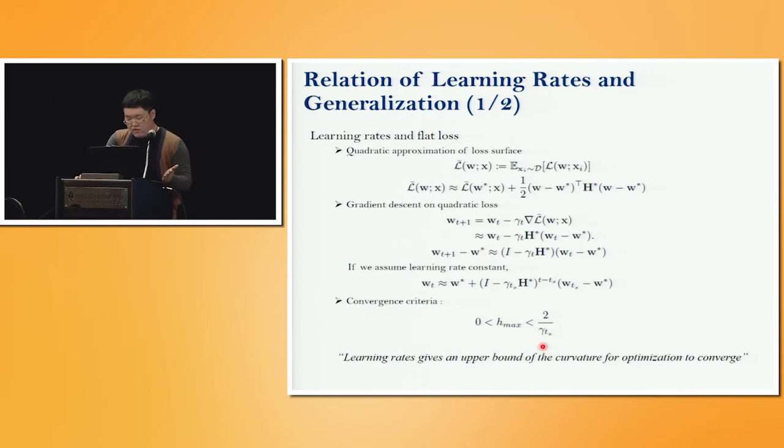If we rethink this condition, learning rate gives upper bound of curvature of losses. Therefore, if the learning is converging, large learning rate makes learning to discover flat losses. Large learning rate makes this term small and curvature also gets small.